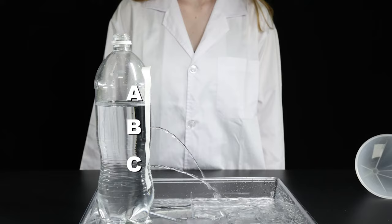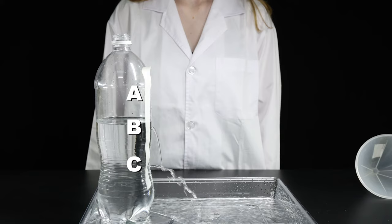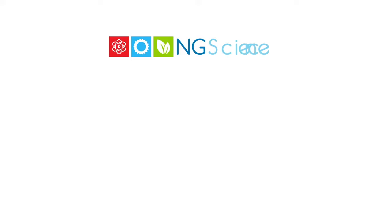There is less water pressure at hole B. The water spurts out at a shorter distance. The water pressure at hole C is the greatest. The water spurts out the furthest.